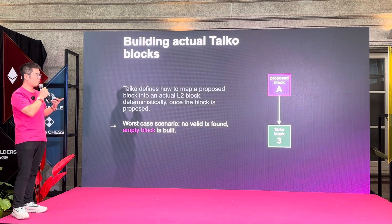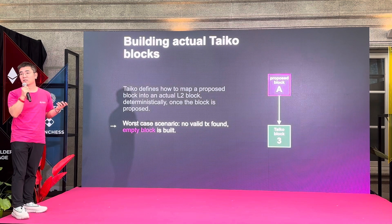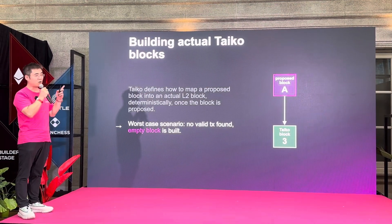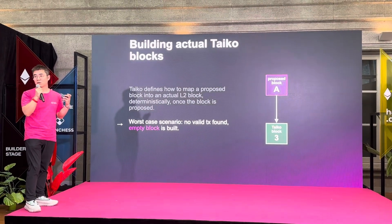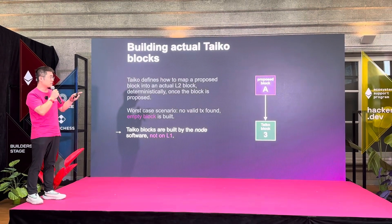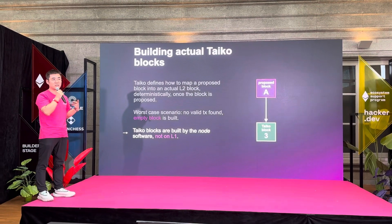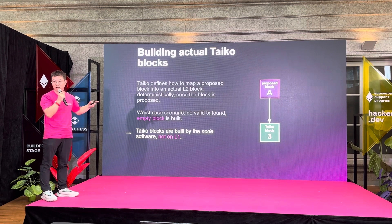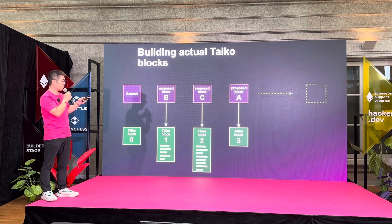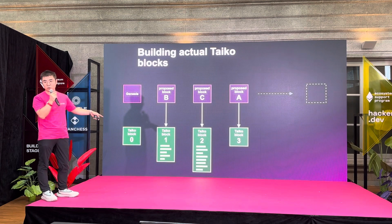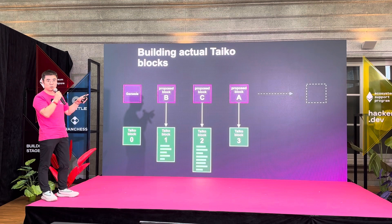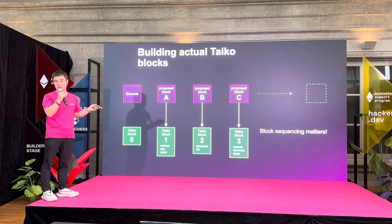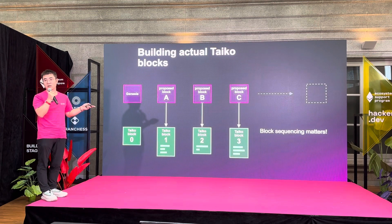In the worst case scenario, a proposed block may contain a lot of transactions, but none of the transactions are valid on layer two based on the parent block. Then we have an empty block. For all the proposed blocks, there will be one type of L2 block. The sequencing really matters because on layer two, we decide a set of rules to map the proposed block to the actual Taiko block. The sequencing really matters about which transaction got executed on layer two and which ones are not.